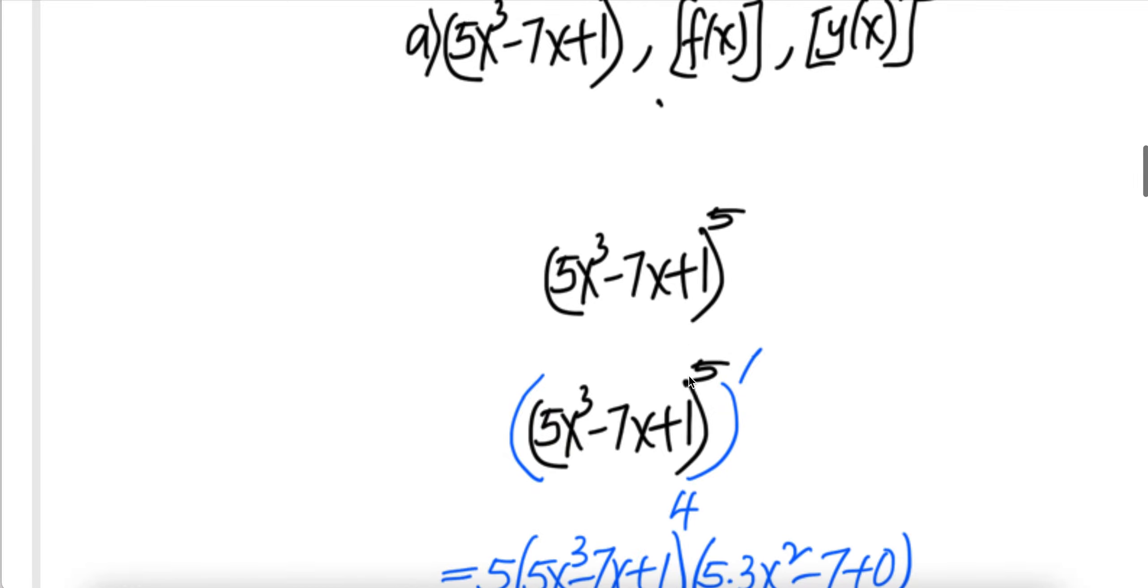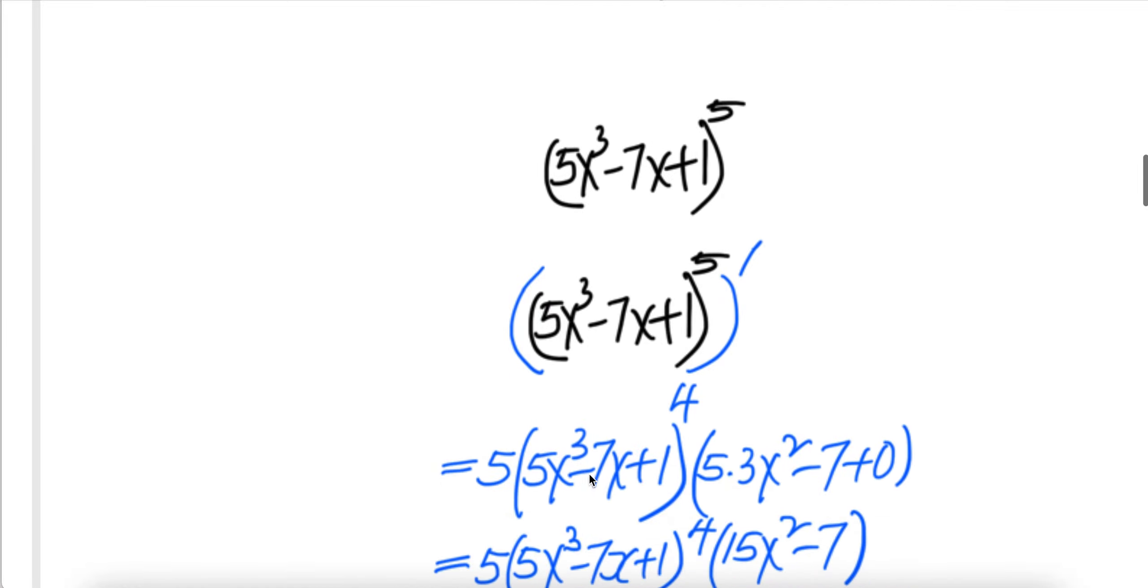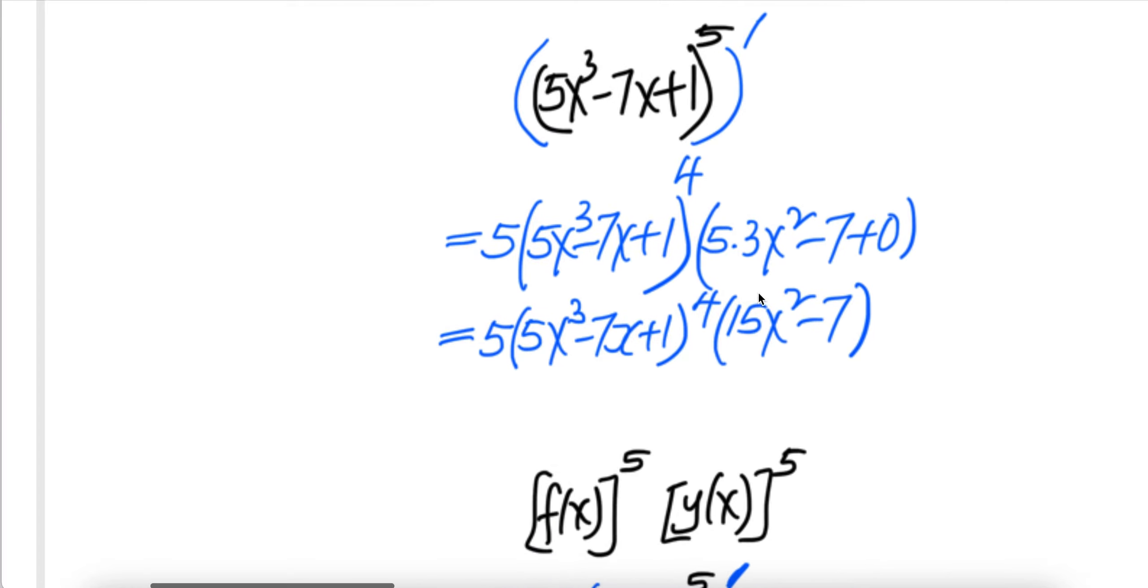The derivative of this is 5 comes down, 5 less 1 will be this piece to the power 5 times the derivative of this is that. And then 5 times 3 is 15, and then minus 7. So the derivative of that is this.